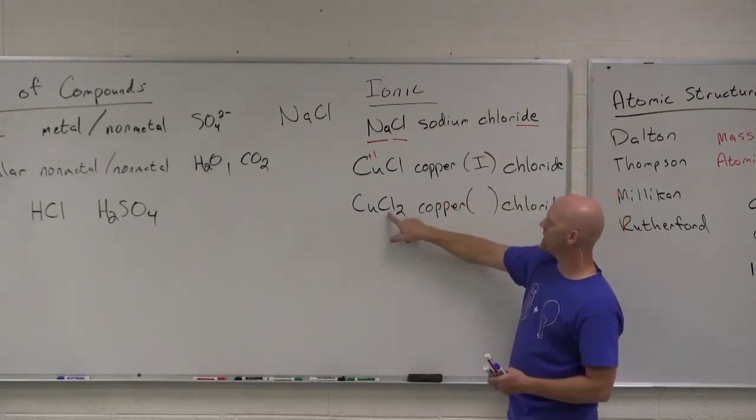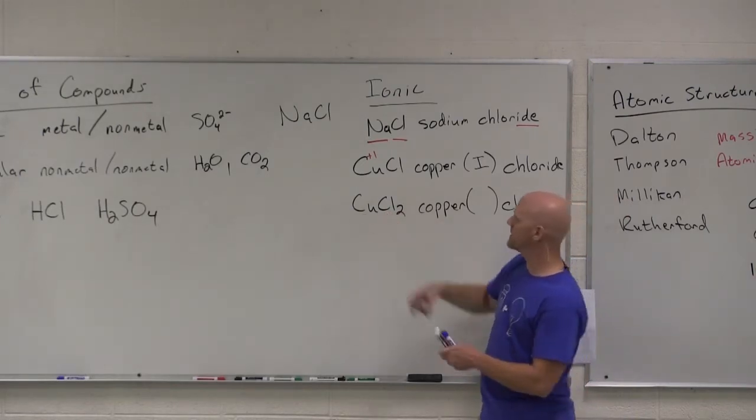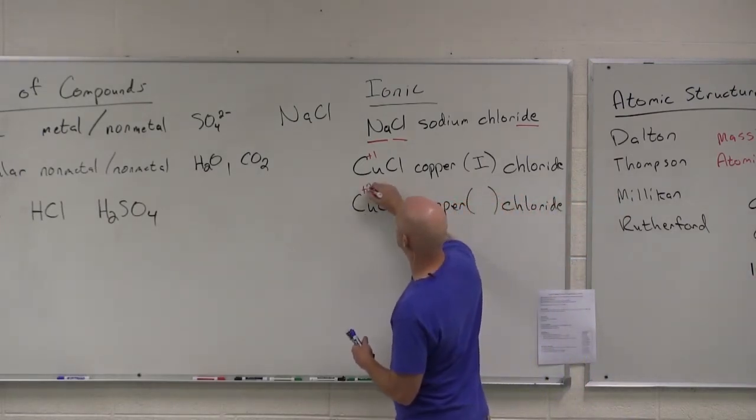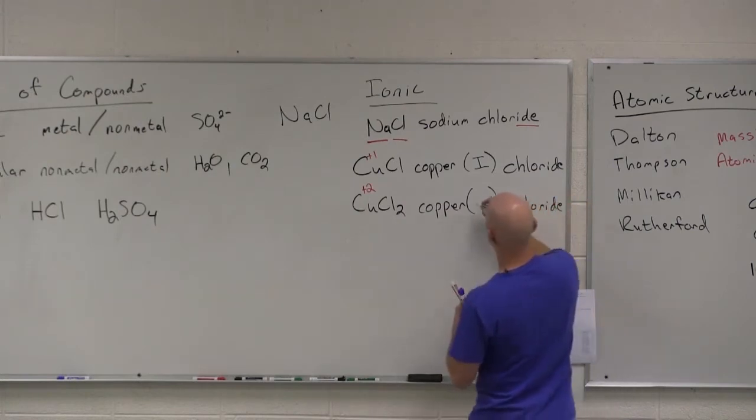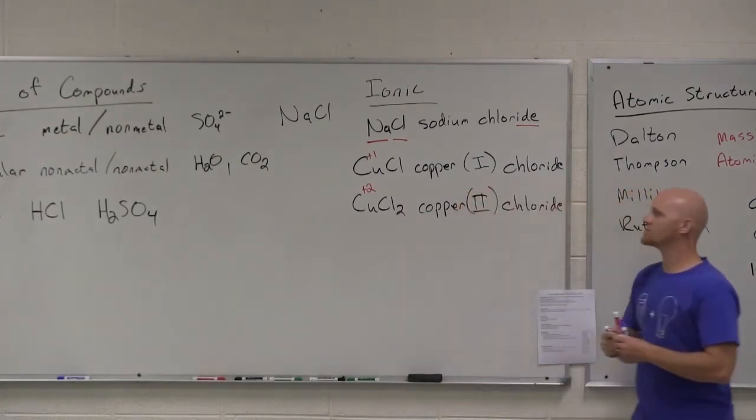And again, if chlorine is minus one and there's two of them, to balance copper here must be positive two. And so that's why we put the Roman numeral two here as well.